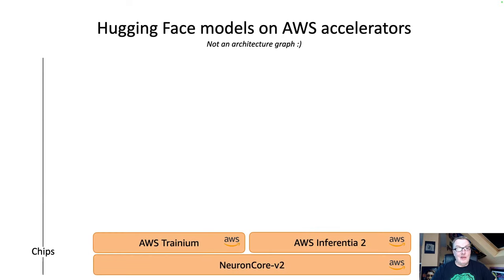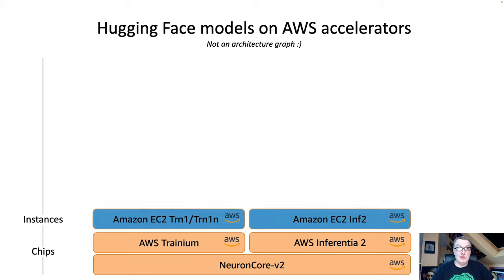At the bottom, we have the chips: AWS Trainium for training, AWS Inferentia 2 for inference. As we'll see, they're very, very similar. In particular, they share the same compute element, which is called the Neuron Core. We'll focus on Neuron Core V2. Neuron Core V1 was only for Inferentia 1, which is not in scope for this discussion. On top of this, we have EC2 instances: TRN1 and the TRN1N variant, and INF2.